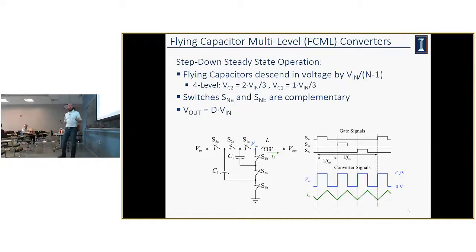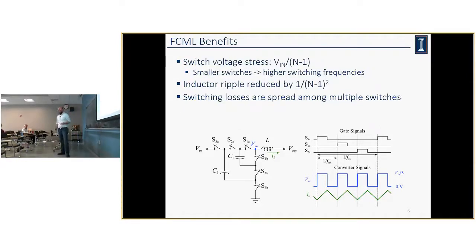So our solution for this is to look at flying capacitor multi-level converters. Basically, this allows us to use these 650 volt GaN devices in these type of applications. You've got flying capacitors, this is showing a four level. You've got two capacitors that step down the voltage and spread out your voltage across your different switches. The switches act in complementary pairs, and you can think of it like a buck when you're looking at the step down operation. In the end, you get a switching node that is filtered by your inductor and has the same transfer function. Vout is equal to D times VN. So very similar operation.